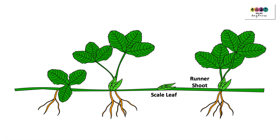Here is the strawberry plant, and you can see the runner shoot — you know that it's coming from the stem because of the presence of that scale leaf. Just remember that previous exam question: the scale leaf.